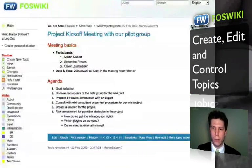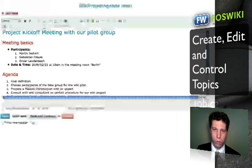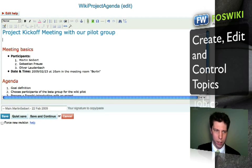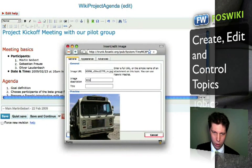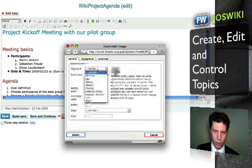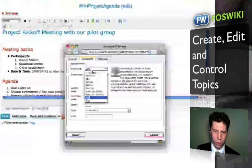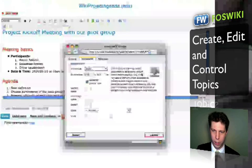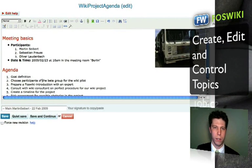FossWiki gives you even more possibilities to format your page. You can also add images — I'm doing that here with a bus image. I'd like it on the right side. I can see where it should be positioned, click Edit, and the picture appears. Then I hit Save.